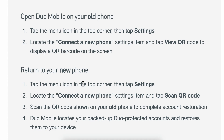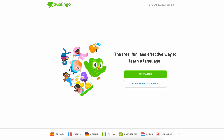Now open Duolingo on your new phone, tap the menu icon in the top corner, then tap Settings. Locate the 'Connect a new phone' settings item and tap 'Scan QR code.' Scan the QR code shown on your old phone to complete the account restoration. Duolingo will locate your backup accounts and restore them to your new device.